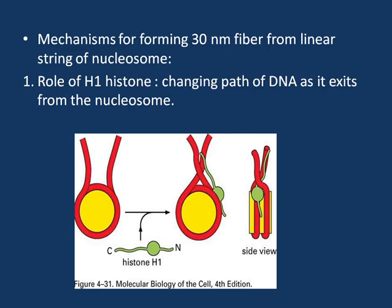The first is histone H1, which plays a very important role. When the DNA is coiled around the histone octamer, two turns are formed. When the DNA exits from the nucleosome, histone H1 bends the DNA and changes its exit path. This is very crucial for compaction of the nucleosomal DNA and ultimately interlocks the nucleosomes to form the 30 nanometer fiber.